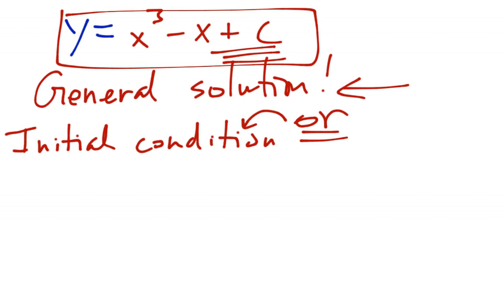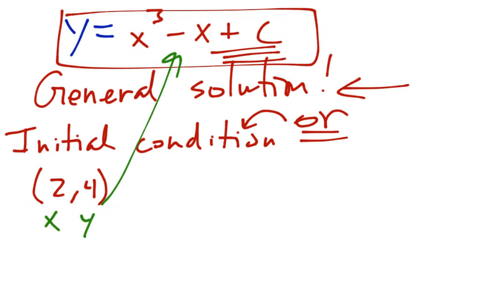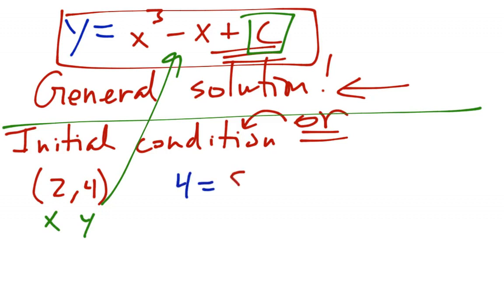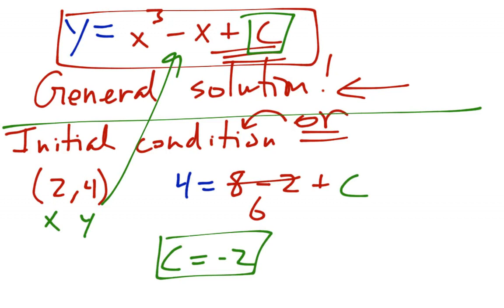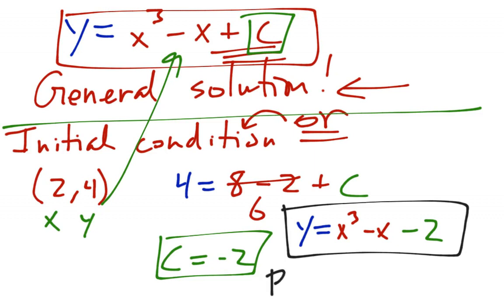Let's say we have the initial condition that this graph passes through the point (2, 4). Now I know what x and y are equal to. I'm going to plug these into my formula to solve for c. So y is 4: 4 equals 2 cubed, which is 8, minus 2 plus c. So 4 equals 6 plus c, and if I subtract 6, I get c equals negative 2. Now I can plug this back into my general solution: y equals x cubed minus x minus 2.